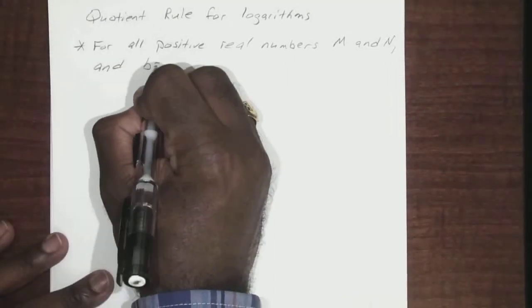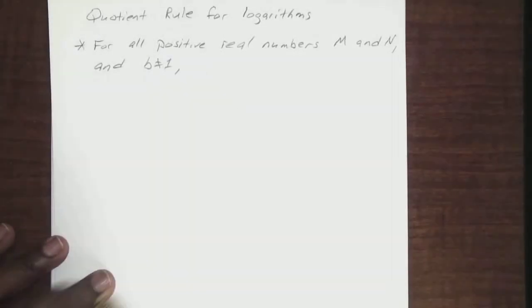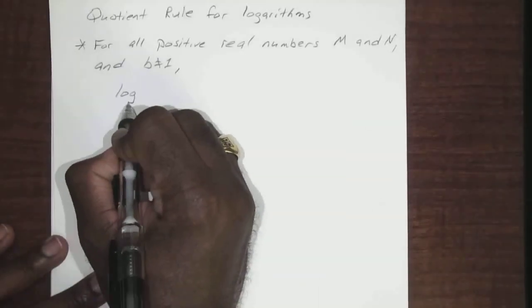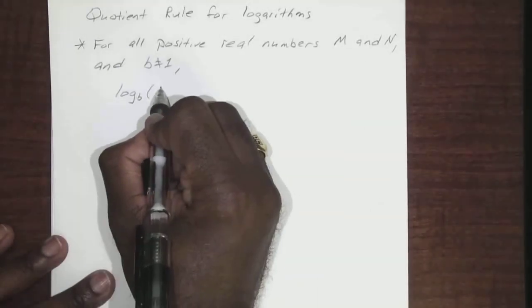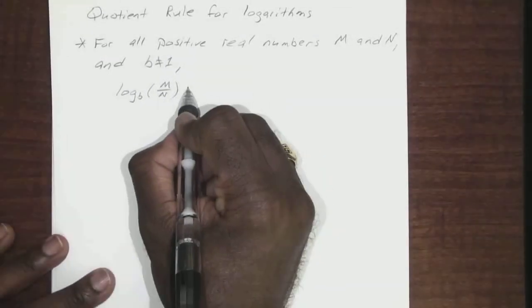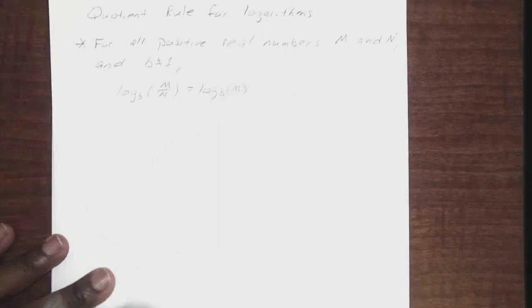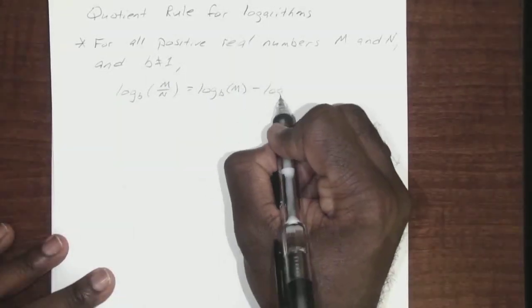And again, we know our base can't equal 1. Log base b of m divided by n is going to equal log base b of m minus log base b.